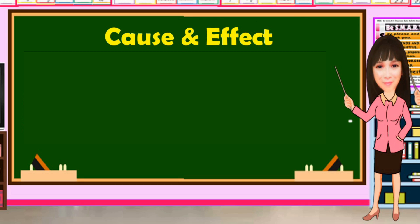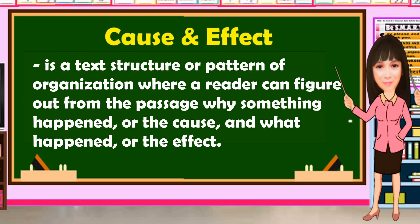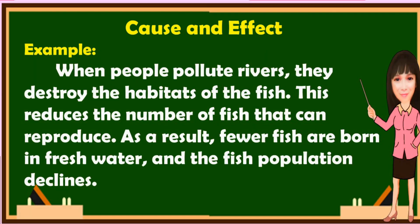Another text type is cause and effect. What is cause and effect text type? The text explains events — which is the cause — and the results of these events are the effects. It's a text structure or pattern of organization where a reader can figure out why something happened, or the cause, and what happened, or the effect. Here is an example: When people pollute rivers, they destroy the habitats of the fish. This reduces the number of fish that can reproduce. As a result, fewer fish are born in fresh water and the fish population declines.